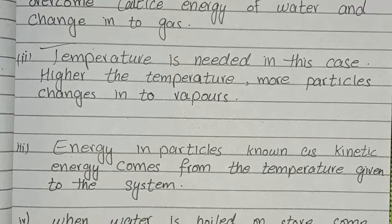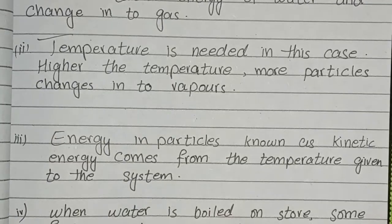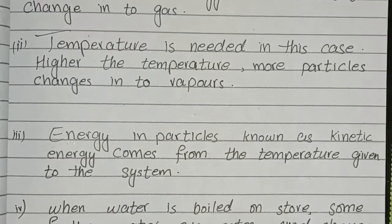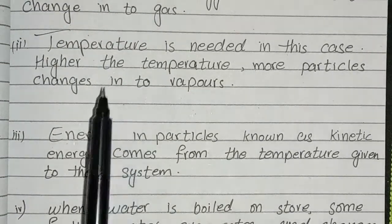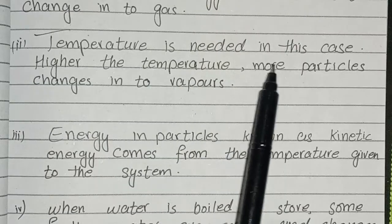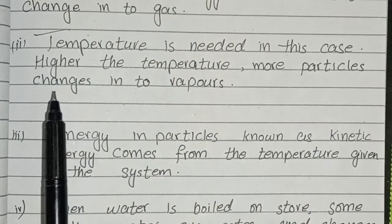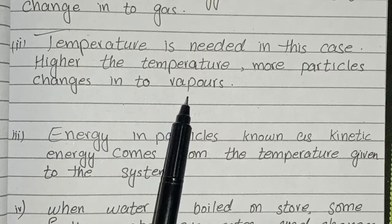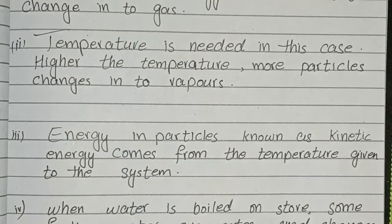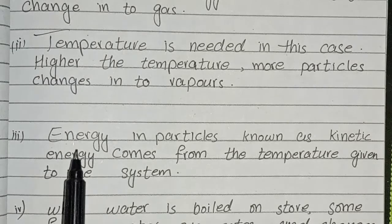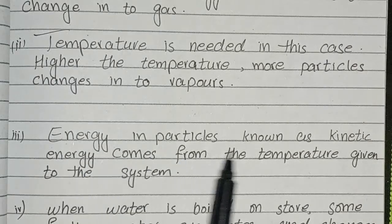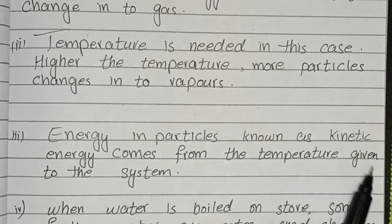Next question: what is needed to make this happen? Temperature is needed. The higher the temperature, the more particles change into vapors. Suggest where this energy might come from: this energy in particles, known as kinetic energy, comes from the temperature given to the system.